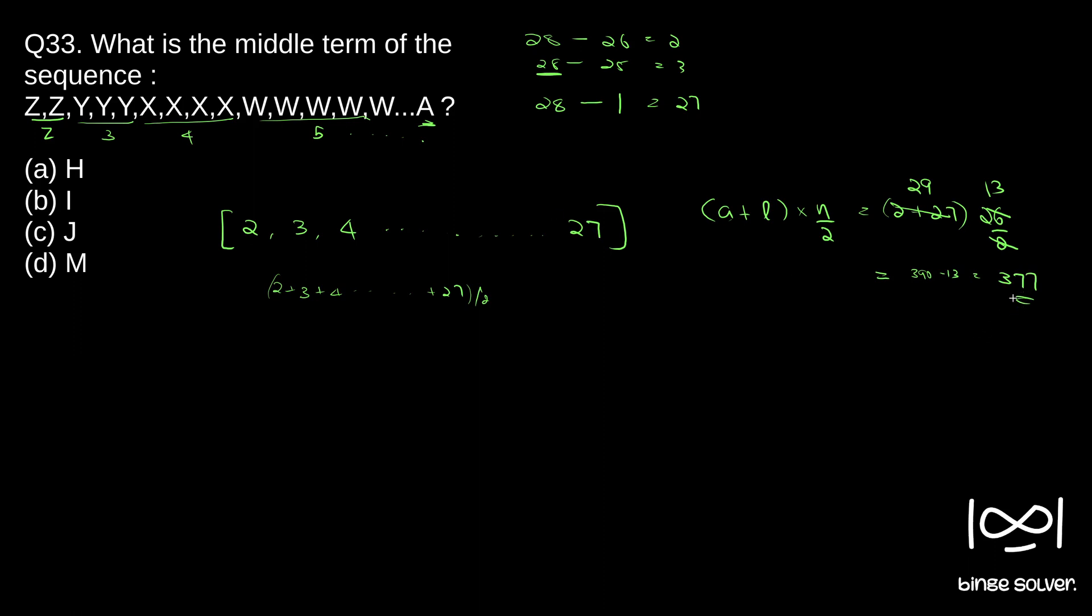And when we have 377 numbers, what will be the middle term? 377 by 2 since it's an odd number, 377 by 2 plus 1. So why? If we have 4 numbers, say we have 7 numbers, how will we find the middle term? Middle term is nothing but 4 that we can find by 7 by 2 plus 1. 7 by 2 without fraction. Or we can just write 7 plus 1 by 2.